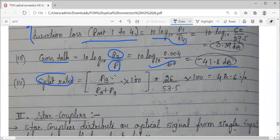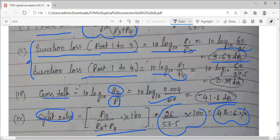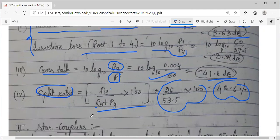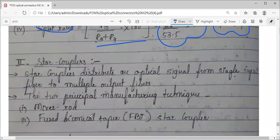Coming to the last one, split ratio: P3 divided by P3 plus P4, or you can take 1 minus P4 divided by P3 plus P4. This is found to be 48.6%, the split ratio. This is one equation paper problem for eight marks. The important thing is to remember the equations.